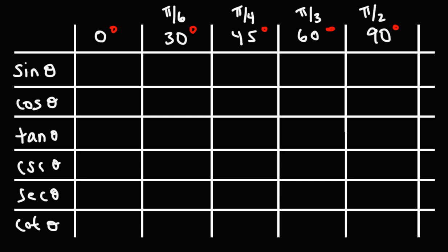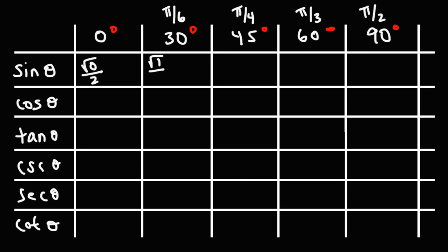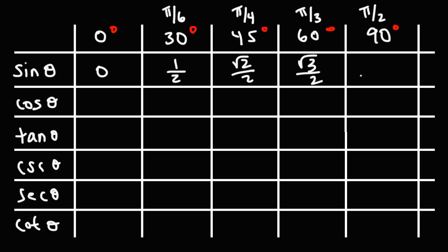For sine, here's a trick that can help you remember these values. As you go from 0 to 90, it's going to be the square root of 0 over 2, the square root of 1 over 2, the square root of 2 over 2, the square root of 3 over 2, and the square root of 4 over 2. Notice the pattern: square root of 0 over 2 simplifies to 0, square root of 1 is just 1 half, square root of 4 is 2, and 2 over 2 is 1. So that gives us 0, 1/2, square root of 2 over 2, square root of 3 over 2, and sine 90 is 1.